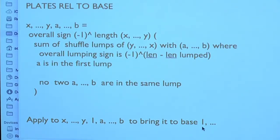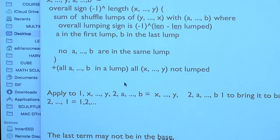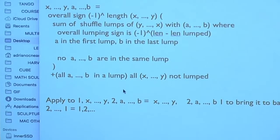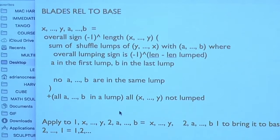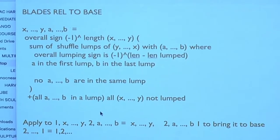Since 1 and A are in the first lump, this way you bring the plates to bases. You can restrict it — you don't need all of these, because you may want to work with the bases of trees. Now, these are the co-dimension 1 blades. The relation brings them to the base: you start with X, Y, A, B. The bases for blades — for co-dimension 1 blades — are the blades which start with 1, 2, because the blades are cyclically ordered.